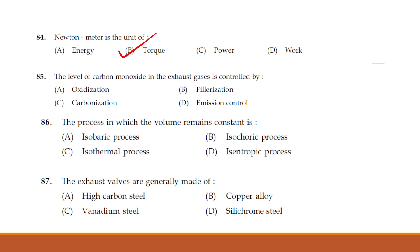Level of carbon monoxide in exhaust gas is controlled by using an emission controller. The process that remains constant is known as isochoric process — option B.